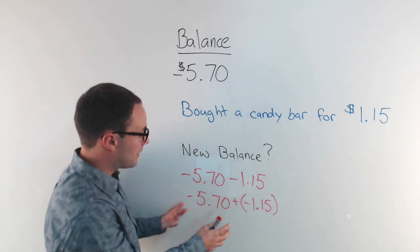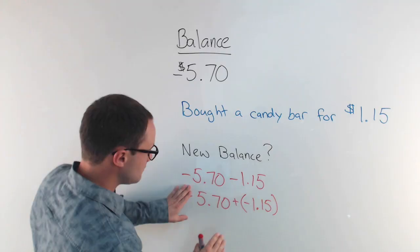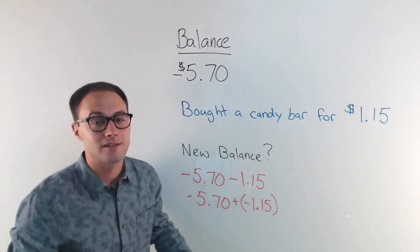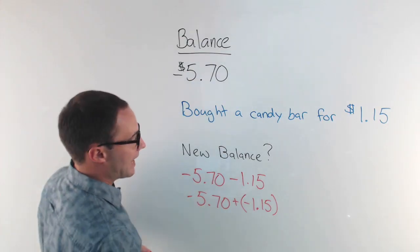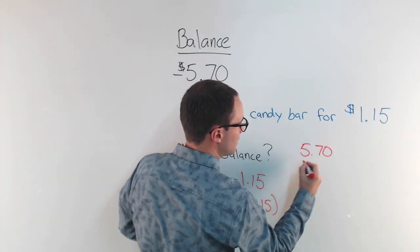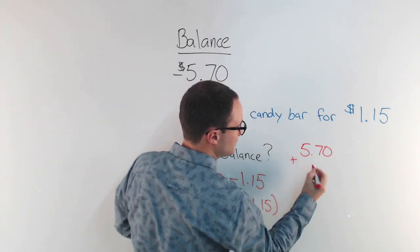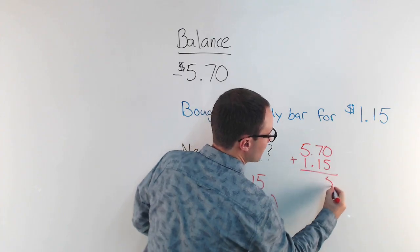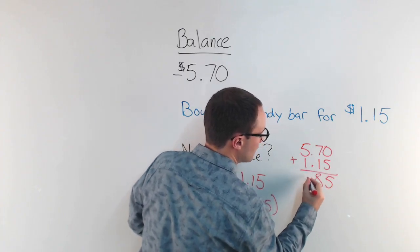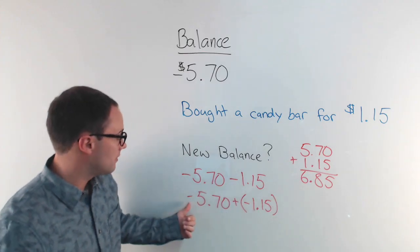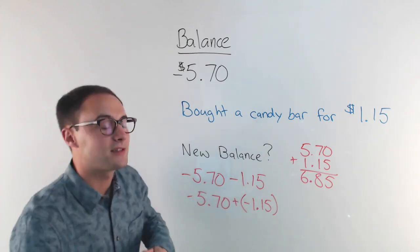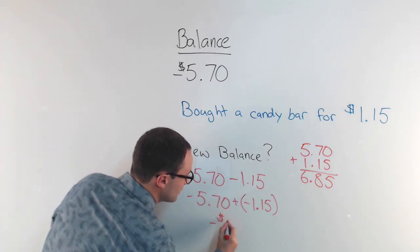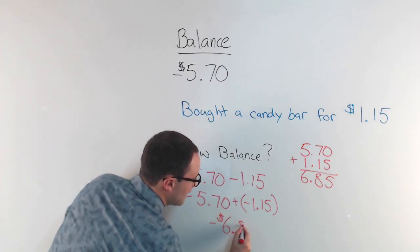They're the same signs. So when we add them, I'm going to basically just look at the absolute value of them, add them together, and then my answer is going to be negative. So adding that together, $5.70 plus $1.15, line up the decimals. And I get 5, 8, 6. And then I got to remember, these were negative. So my answer is going to be negative. So my new balance now is negative $6.85.